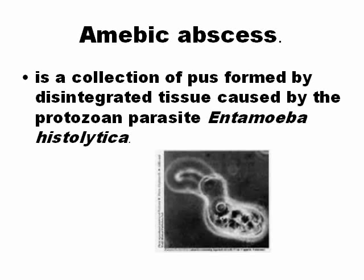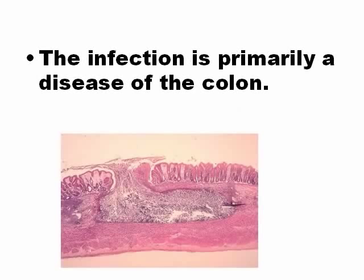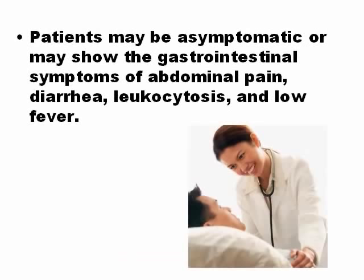Amoebic abscess is a very important disease in the developing world — not common in the United States, but prevalent in Mexico, Venezuela, Africa, and poor Asian countries. It is produced by Entamoeba histolytica, which is primarily an infection of the colon that can spread to the liver. Signs include diarrhea with blood, high white cell count, and sometimes fever.